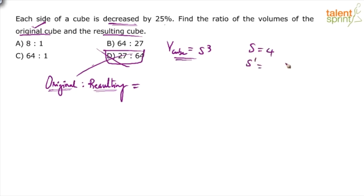It was decreased by 25 percent, right? So when you decrease 4 by 25 percent, how much do you get? You will get 3. Decreasing 4 by 25 percent, you'll get 3, so 4 becomes 3.